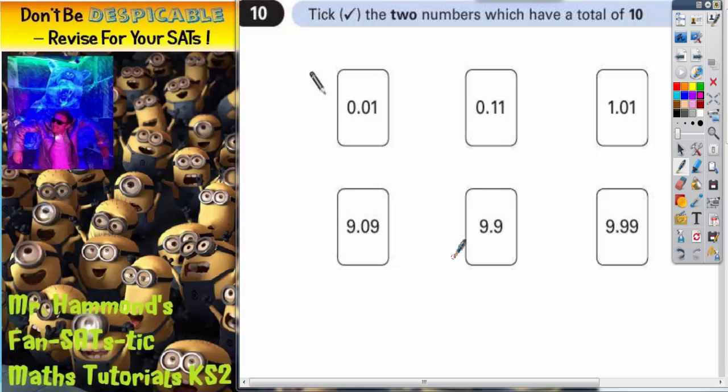So let's actually do a wrong answer to illustrate how we would perform the check. So if you think these two are the two that make 10, this is wrong by the way, but this is how you would check it.